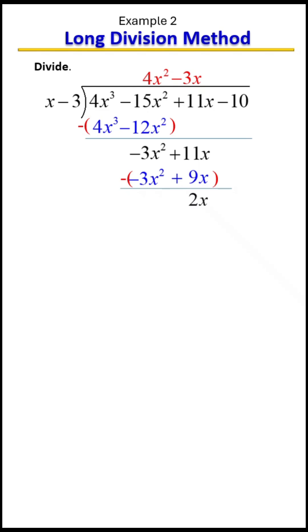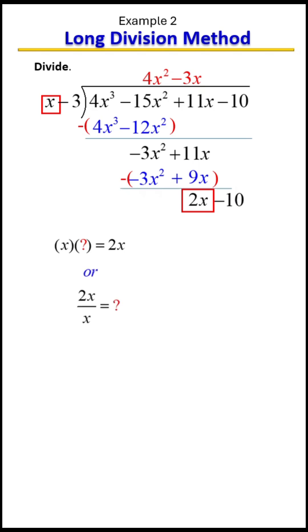We bring down 2x and also bring down our last term. We repeat the process: outside far left, underneath the division symbol far left. Ask yourself what you need to multiply x with to get 2x. You can also look at it as 2x divided by x. Either way, the answer is 2.